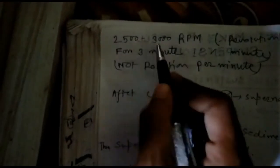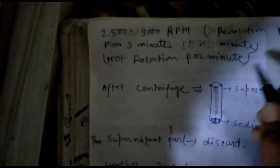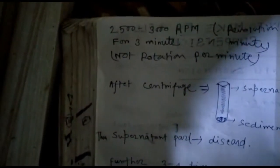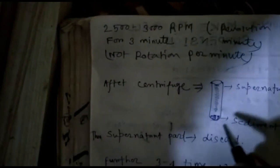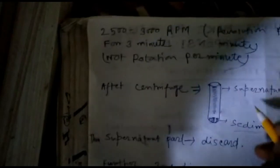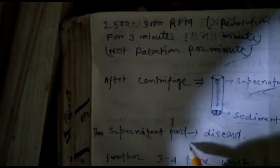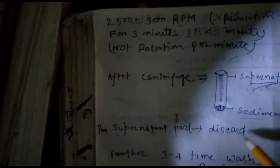Set the centrifuge to 2500 RPM — that is revolutions per minute — and run it for three minutes. After centrifugation, observe the sedimentation part and the supernatant part. Discard the supernatant and keep the sediment. Wash the sediment three to four times using normal saline.